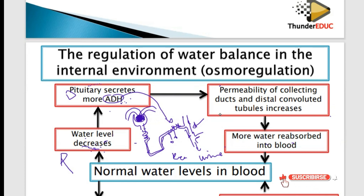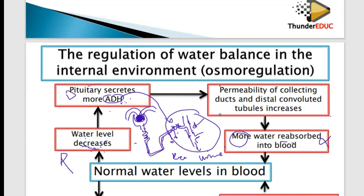More water is being reabsorbed back to the blood. The word is reabsorbed — please don't write 'absorbed,' we will cross it. Why reabsorption? Because the first absorption occurs in the digestive system. This is the second absorption, hence we say reabsorption of water to the blood.